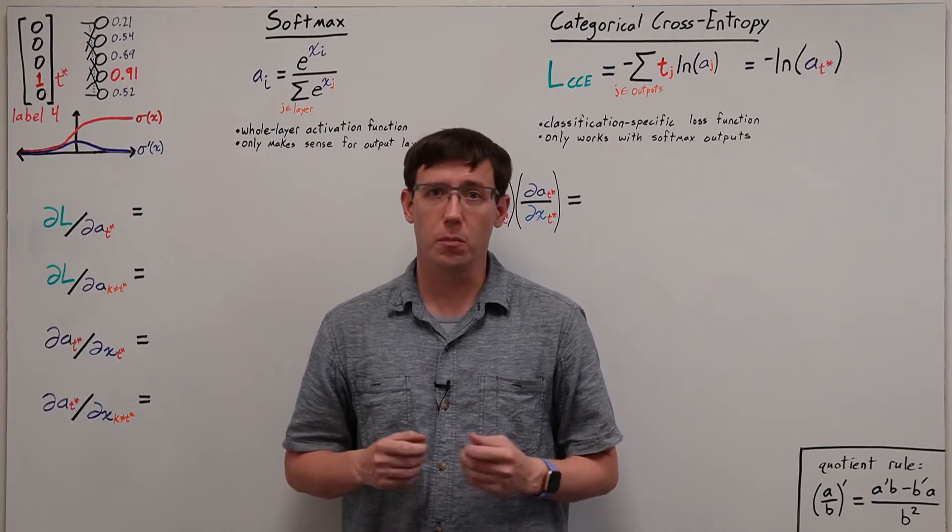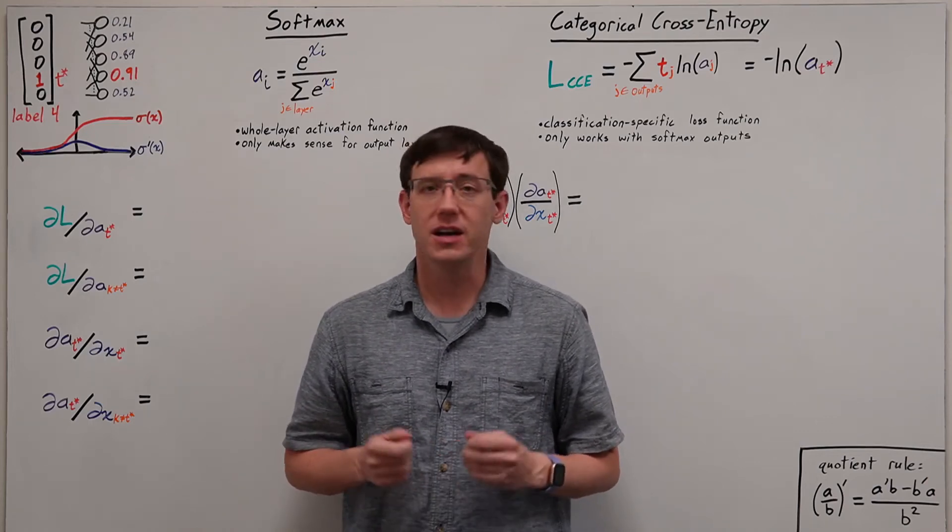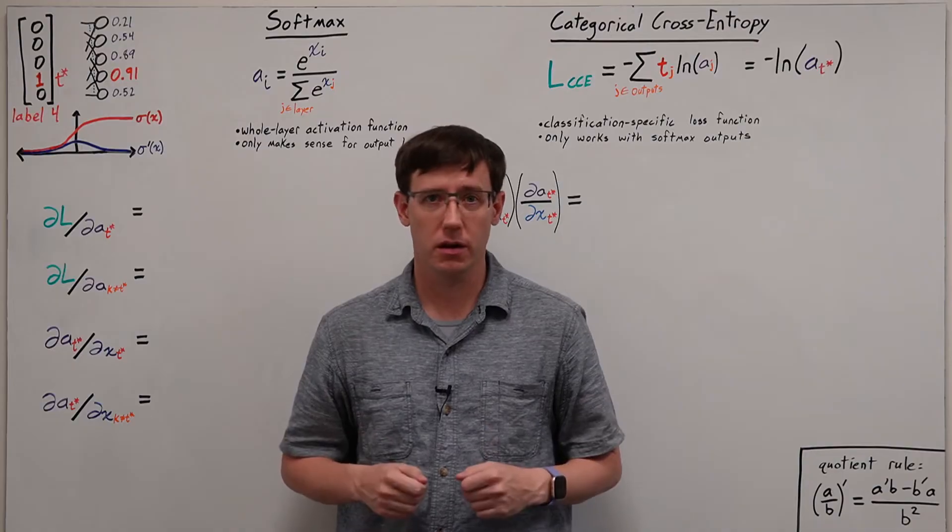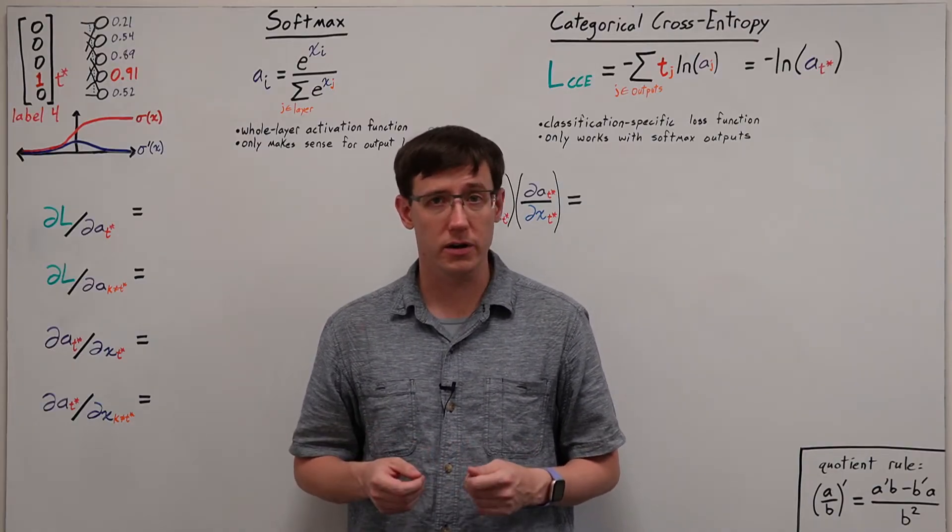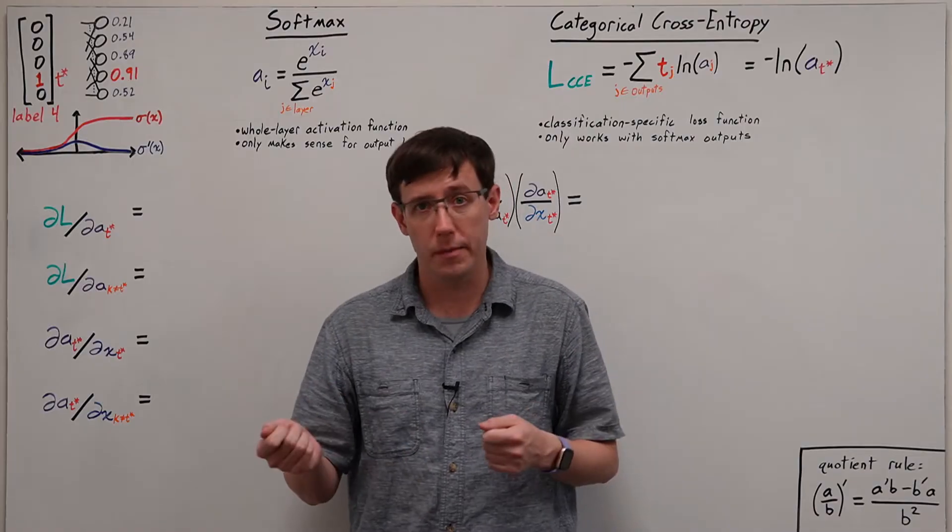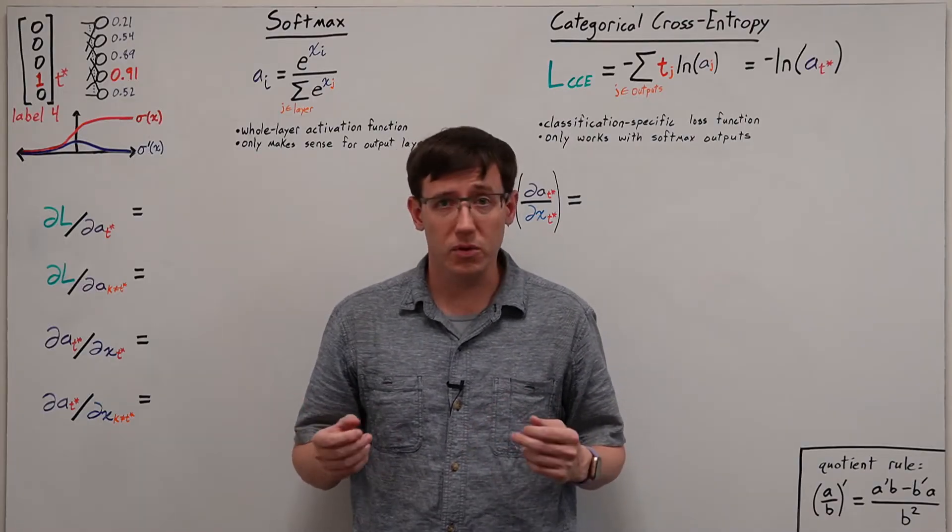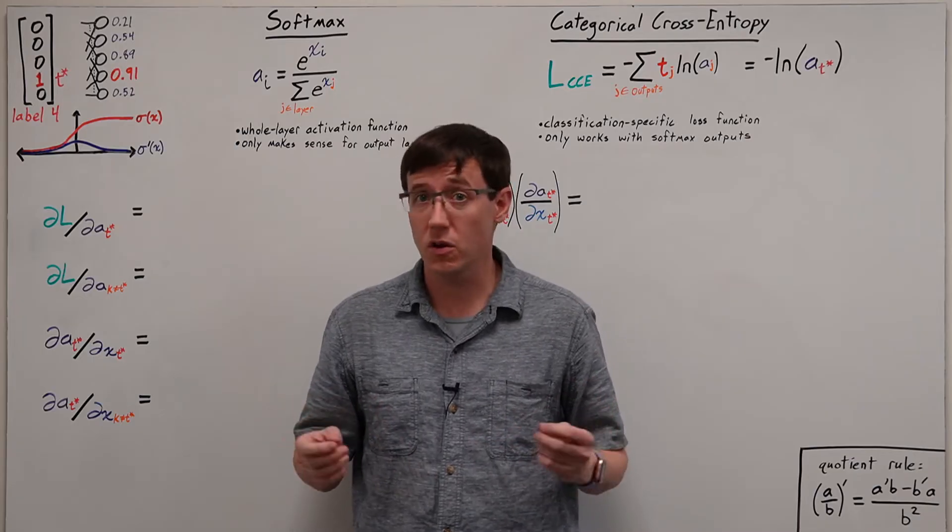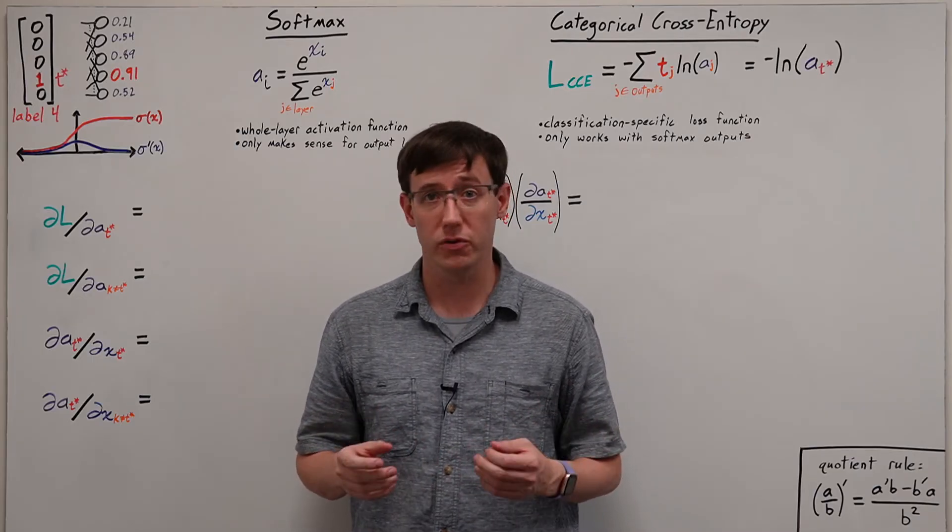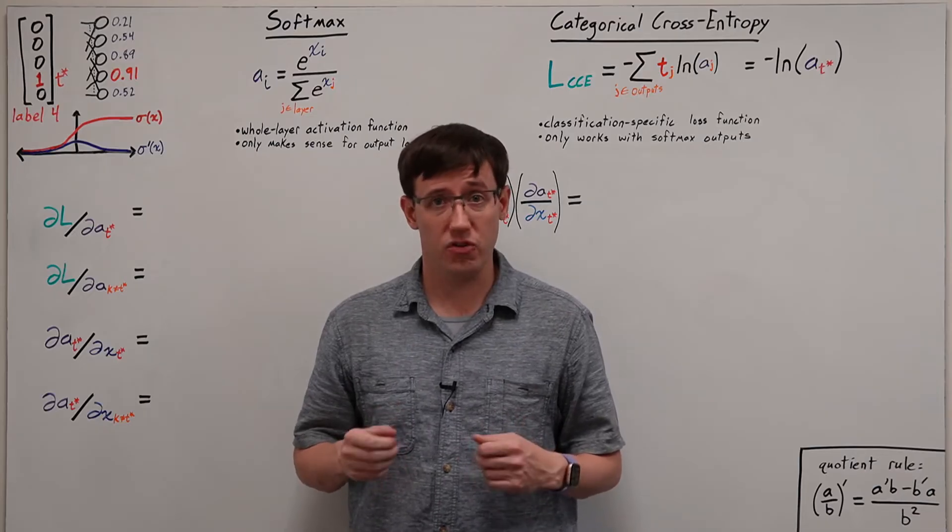When we use a neural network for multi-class classification, sigmoid neurons kind of suck. When we only had two classes, we could use a single neuron to output 0 or 1. But if we have several labels, like 0 through 9 for classifying handwritten digits, or potentially way more labels for harder problems, we need a different representation.